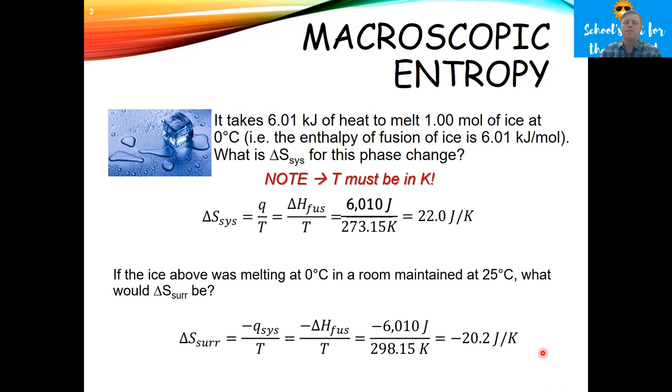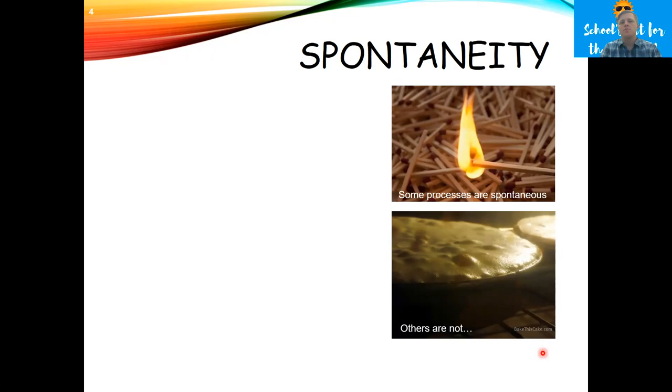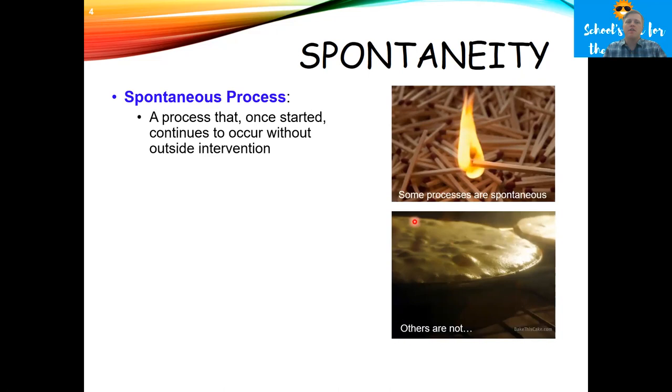That's it for reversible processes. Now we'll get into Gibbs free energy. To start the conversation on Gibbs free energy, we always have to start by talking about spontaneity. In everyday lingo, we think of spontaneity as things just happening at random. That's not what we mean in chemistry. Spontaneity in chemistry has a very specific definition: a spontaneous process is a process that once you start it, continues to occur without outside intervention.